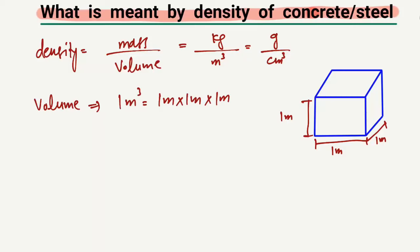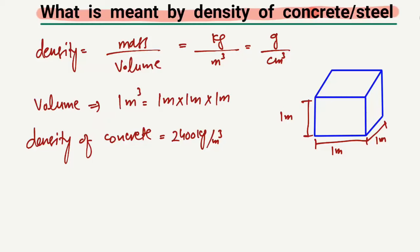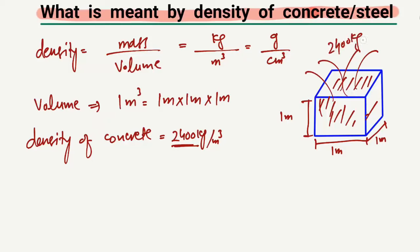Now, how much weight is present in this one cubic meter? That is the density of the material. The density of concrete is equal to 2400 kilogram per cubic meter. It means that 2400 kilograms of concrete can fit into one cubic meter of volume. In one cubic meter, we hold 2400 kilograms of concrete.